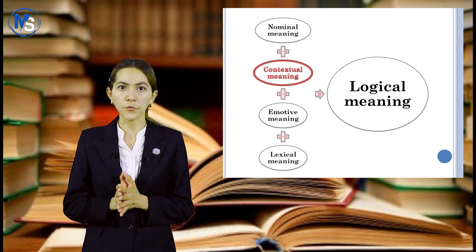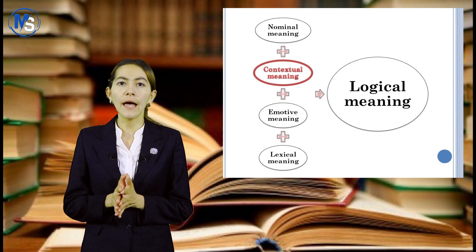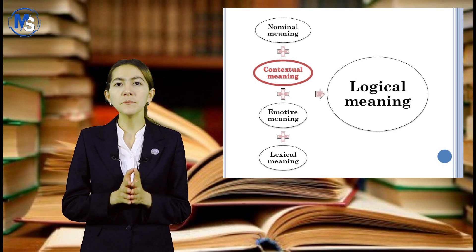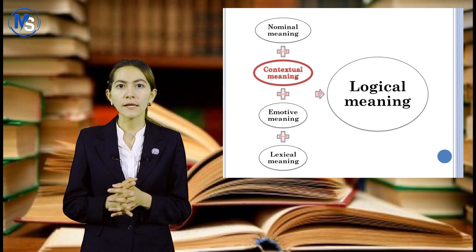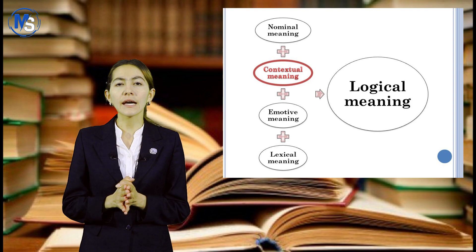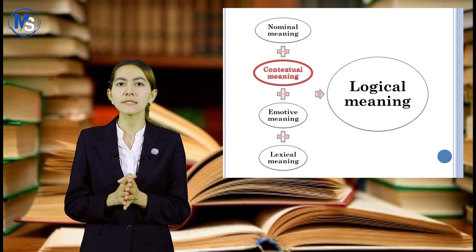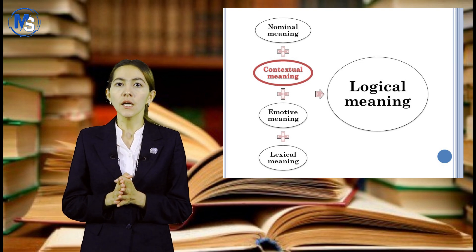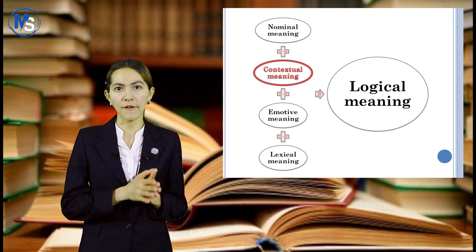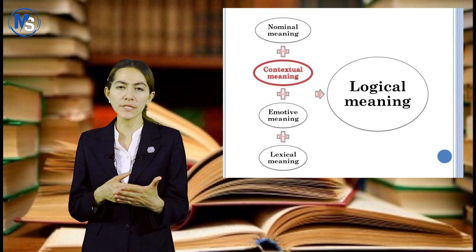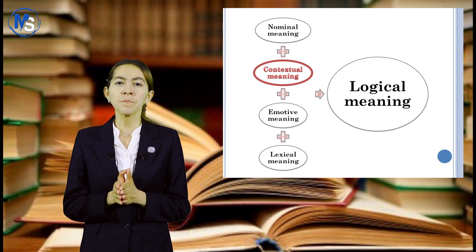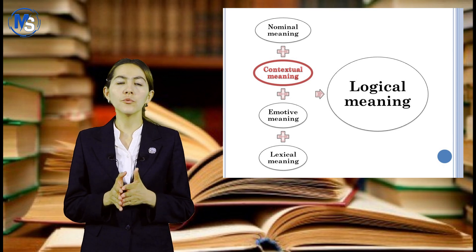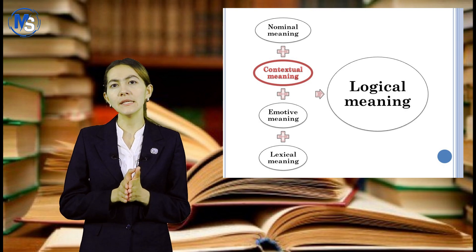Meaning is in the first place when we are speaking, and accordingly the meanings of the words will be different. The meanings in a word will be nominal, contextual, emotive, and lexical. The contextual meaning is important — it's a type of logical meaning — because contextual meaning gives the essential side, the essential fact of what we are speaking and why we are using especially this word, not another. Contextual meaning is made with the help of dictionary meaning and logical meanings.